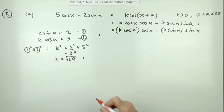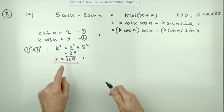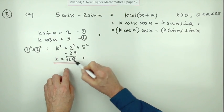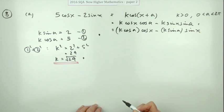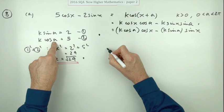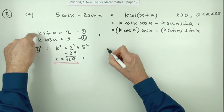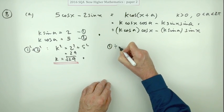That's worth a mark. Notice it's not plus or minus the square root because it said k is greater than zero.